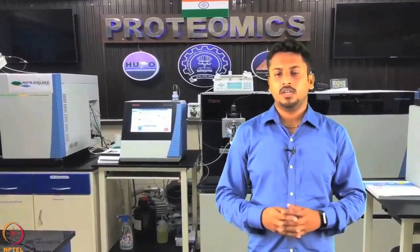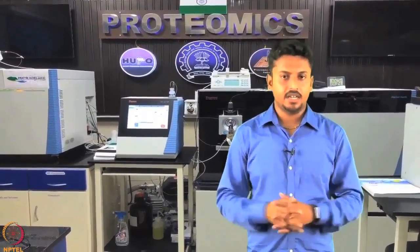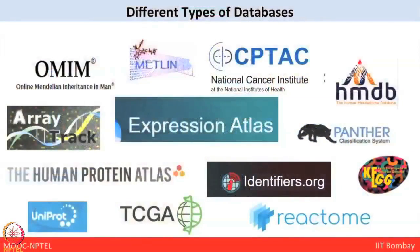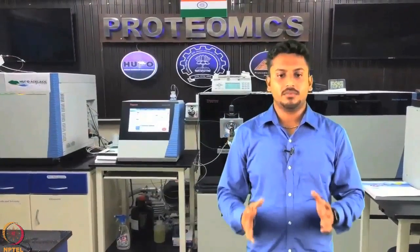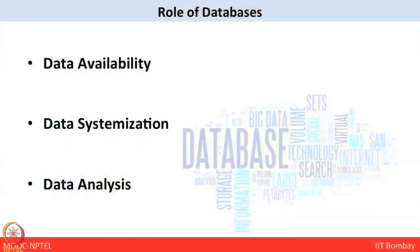Now let us talk about different databases that are available. A database is a collection of data — any data — that can be proteomics data, genomics data, or metabolomics data. There are also many databases available in other fields like astronomy, ecology, and cosmic sciences. The main roles of these databases are availability of biological data, systemization of the data, and analysis of computed biological data.